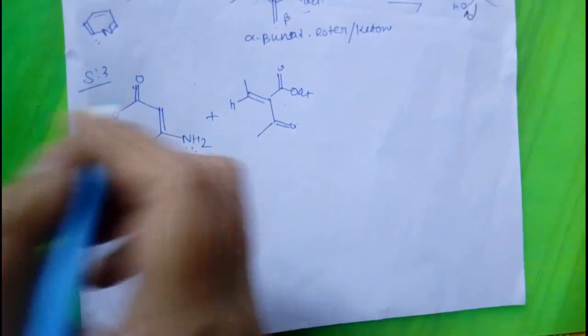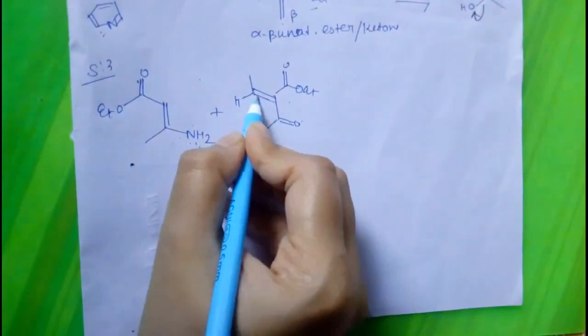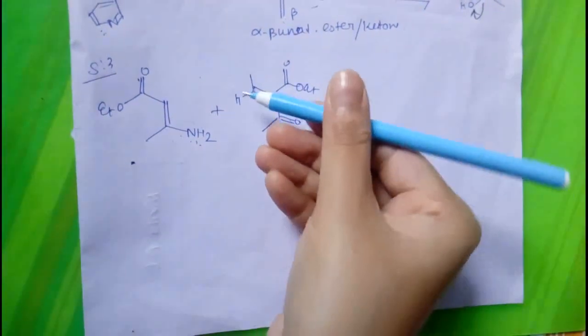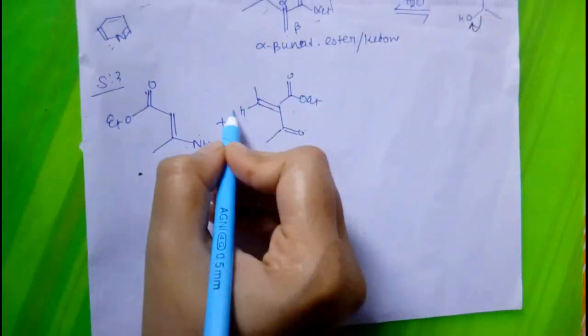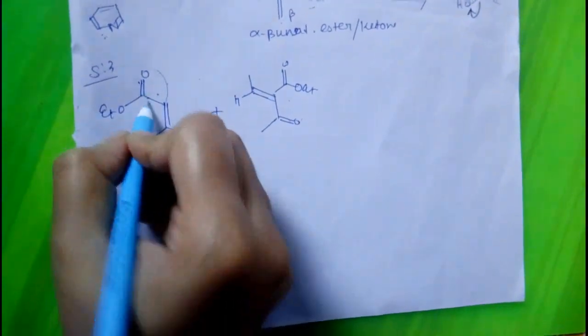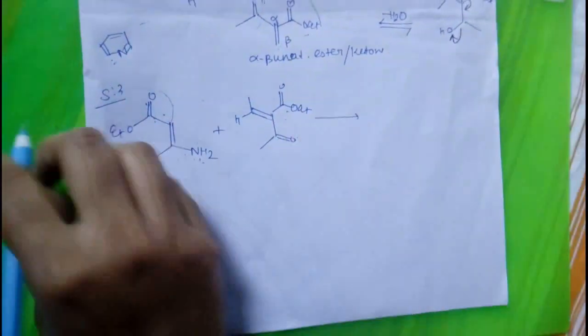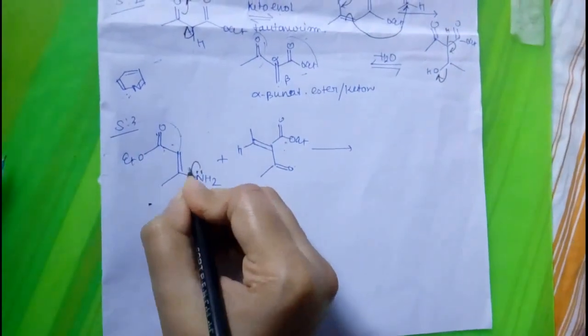Then, as Michael addition will take place, we place the double bond facing this side. And as here is a CO2Et group present, we will place a CO2Et group in its mirror position. And then, we can do it easily.